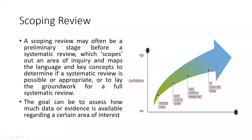Next, we come to the most important and frequently asked question: are scoping review and systematic review the same? No, they are not the same. A scoping review is often a preliminary stage before a systematic review — it scopes out an area of inquiry and maps the language and key concepts to determine if a systematic review is possible or appropriate, or to lay the groundwork for a full systematic review.